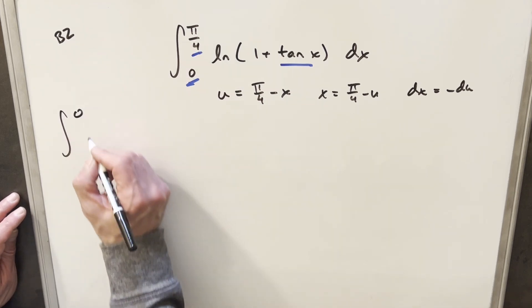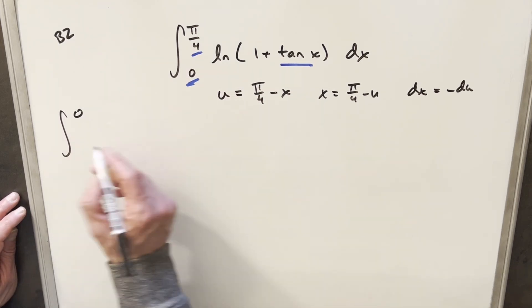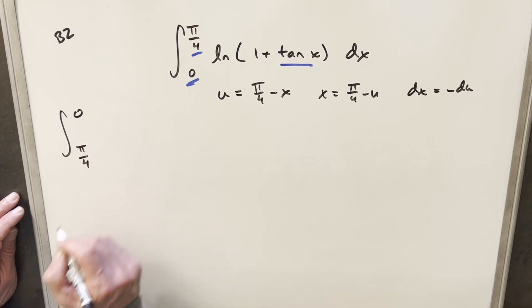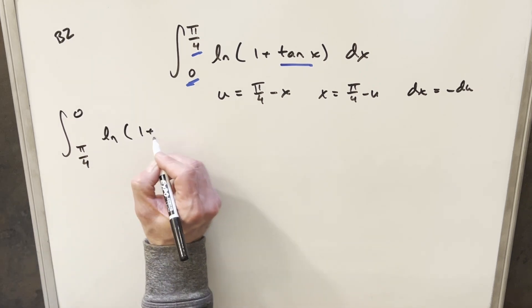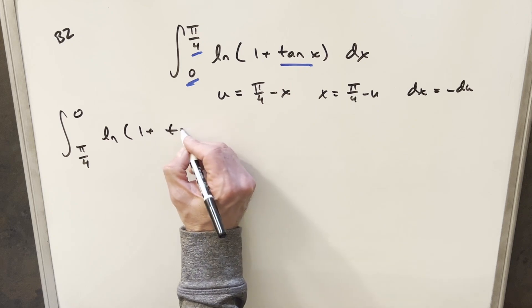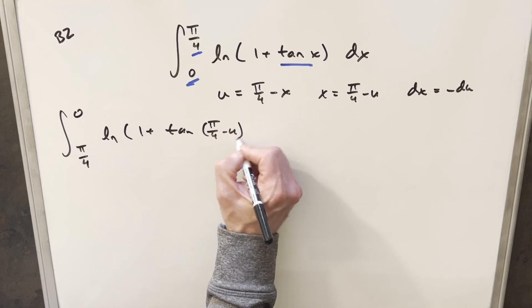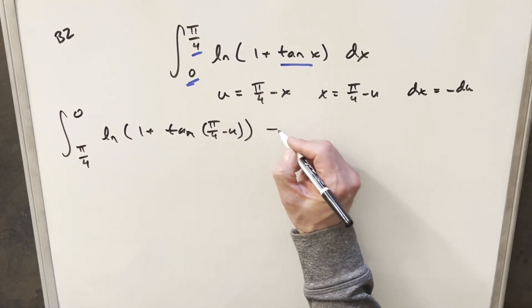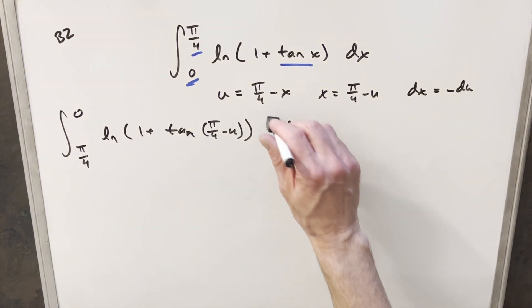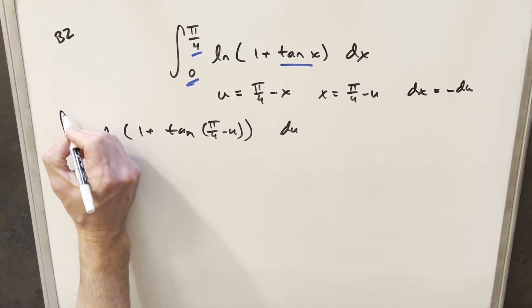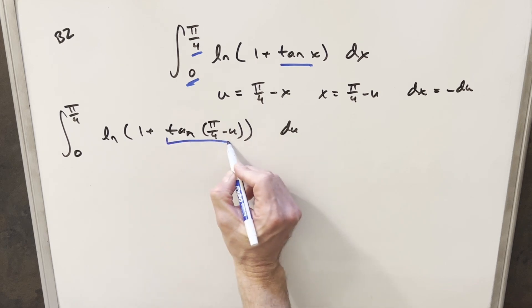So then we can just go ahead and substitute. Plugging in π/4, we get 0 here. Plugging in 0, π/4. Then we're going to have natural log, 1 plus tangent, but our x value is going to be π/4 minus U, so let's just write that in. And then our dx becomes minus DU. But then I'll take the minus sign, bring that out front, and just use it to swap the bounds around. So we'll rewrite it from 0 to π/4. And the thing I need to deal with right now is this tangent of π/4 minus U.